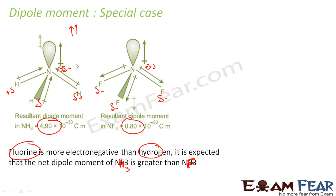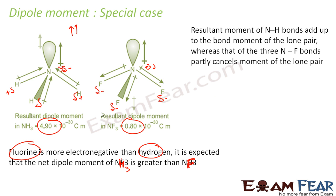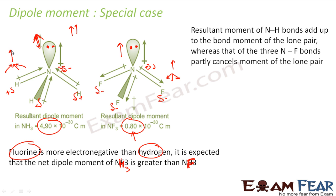Why is the net dipole of NH₃ greater than NF₃? In NH₃, the resultant of the three N–H bond dipoles points in one direction, and the lone pair dipole moment is in the same direction — they add up. But in NF₃, the resultant of the three N–F bond dipoles points in the opposite direction to the lone pair dipole, so they subtract. That is why the net dipole of NH₃ is much greater than that of NF₃.